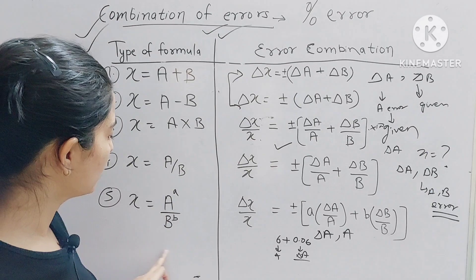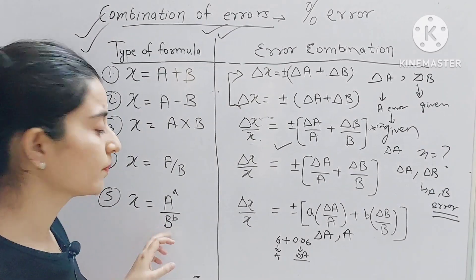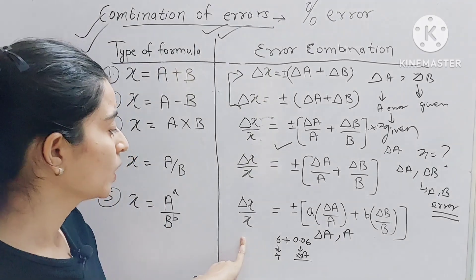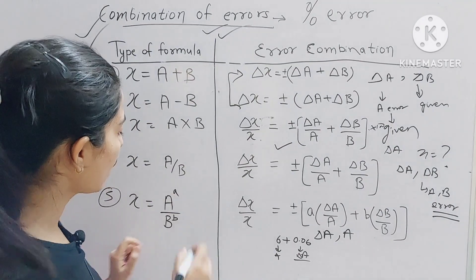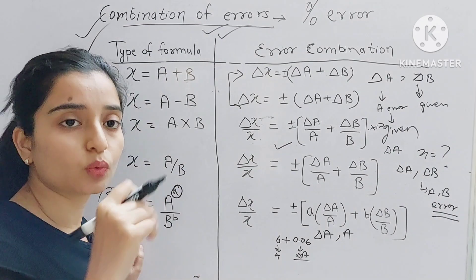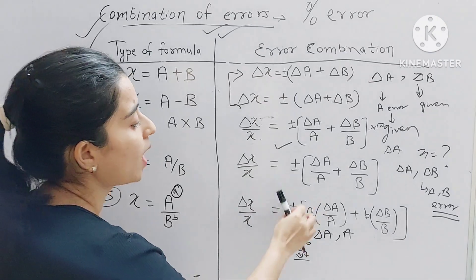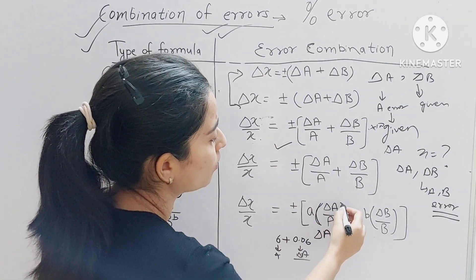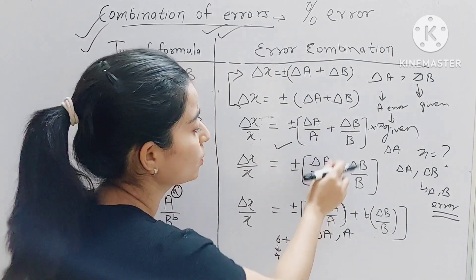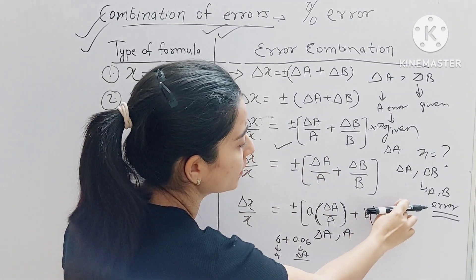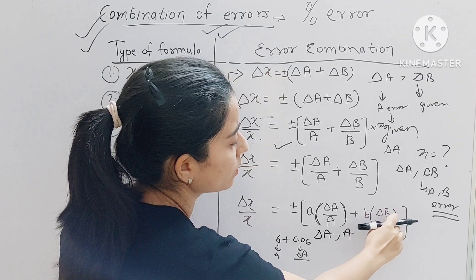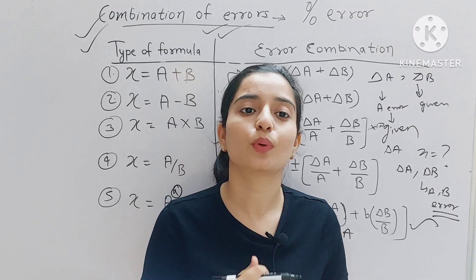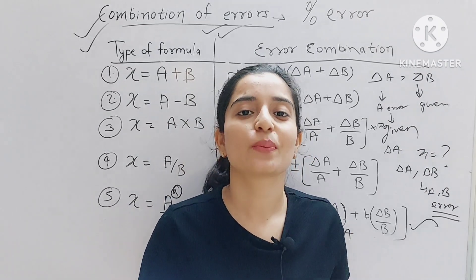After that, if we need to find the error for terms like square, root, or root with power 1/2, we handle them the same way as solving with logarithm differentiation. You put the power as a coefficient in front, then apply the same multiplication/division formula. These are the basic 5 formulas that you can use to solve any error question easily.